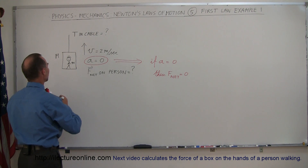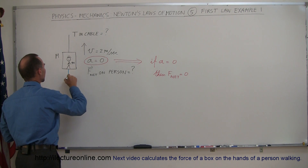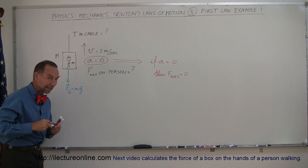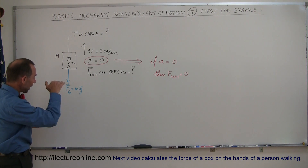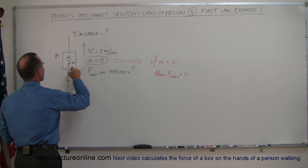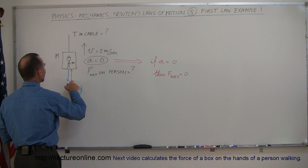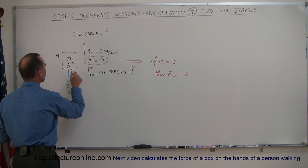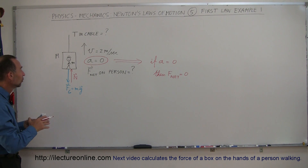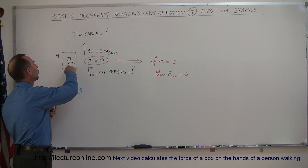For one thing, we have the weight of the person, which is downward — that's the force due to gravity, equal to the mass of the person times the acceleration due to gravity, directed downward. And then, since there's a bottom to that elevator car, there's a normal force pushing back upward, equal in magnitude but opposite in direction to the weight. Those two forces cancel each other out, so there is no net force on the person.